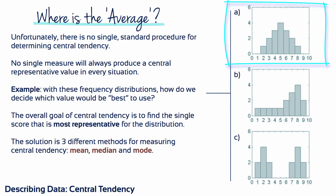The first distribution is symmetrical, with the scores forming a distinct pile centered around x equals 5. For this type of distribution, it's easy to identify the center, and most people would agree that the value x equals 5 is an appropriate measure of central tendency.